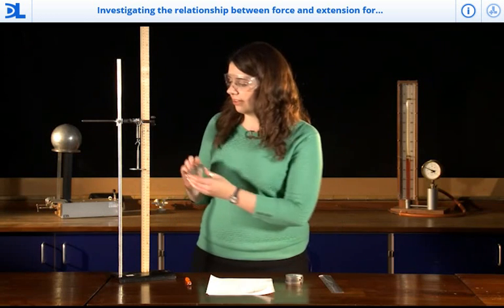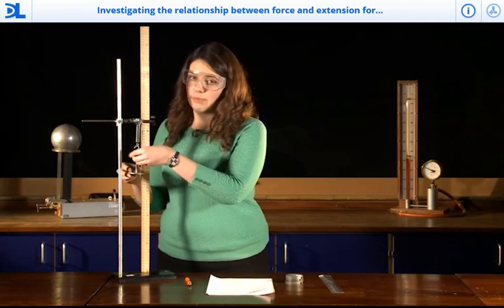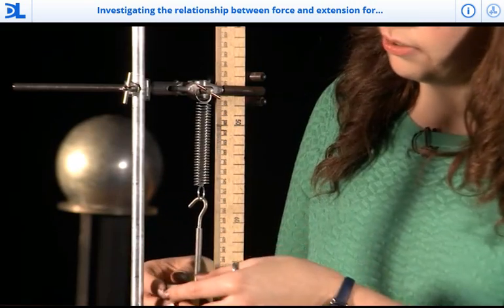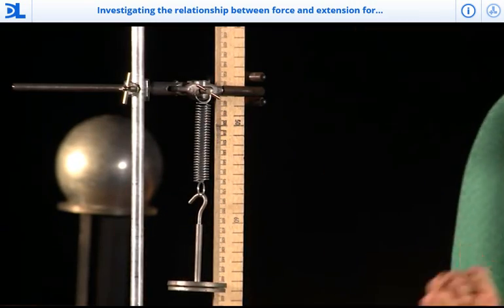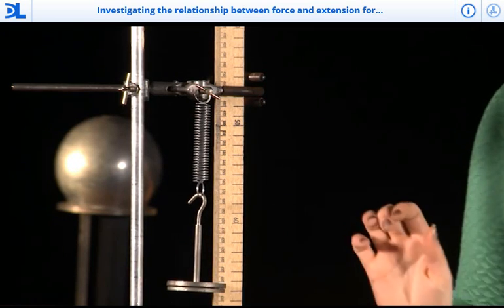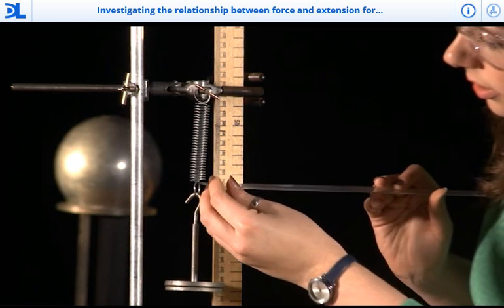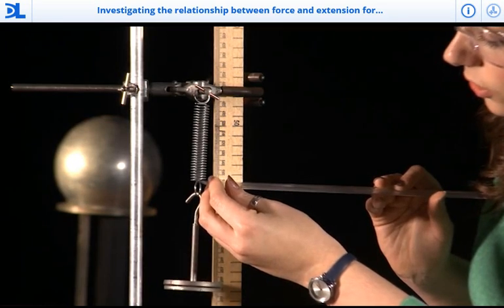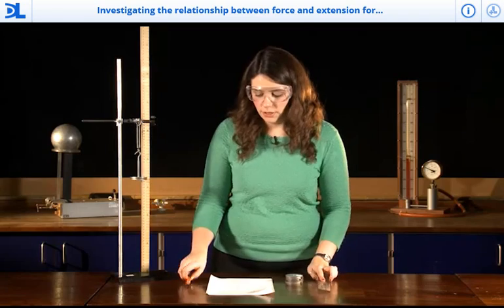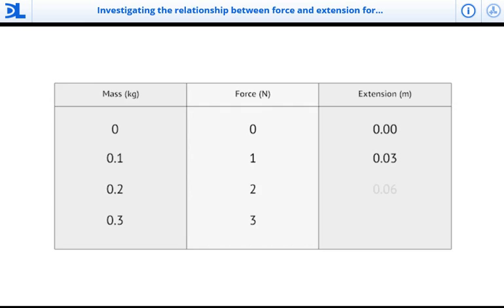Next, I add another mass. This is the same as having 2 newtons of force. I let it settle. And I measure again. I can see that this has gone to 0.56 meters, which means I've now got an extension of 0.06. 0.06 for 2 newtons or 200 grams.